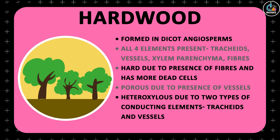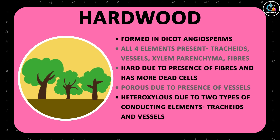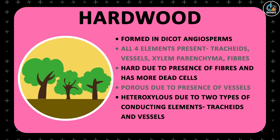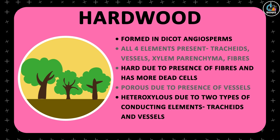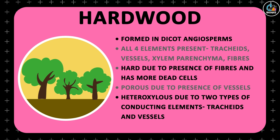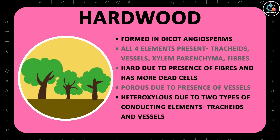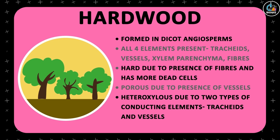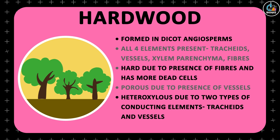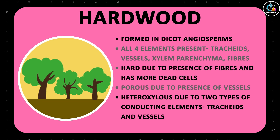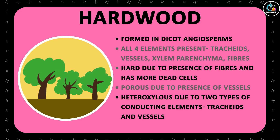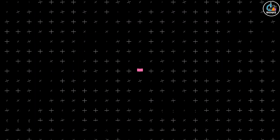Angiosperm wood is also known as porous wood due to the presence of vessels, and since two types of sap-conducting elements — tracheids and vessels — are present, the term heterozylus wood is also often used.